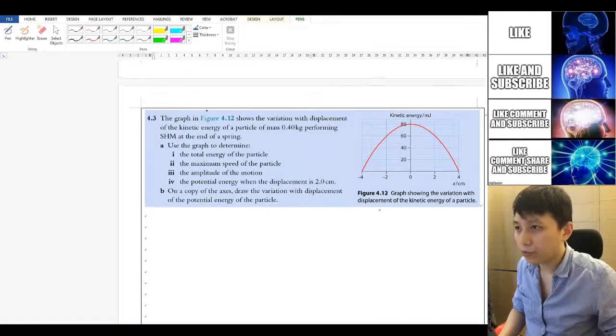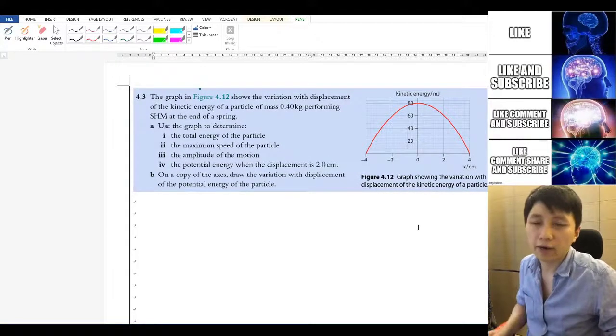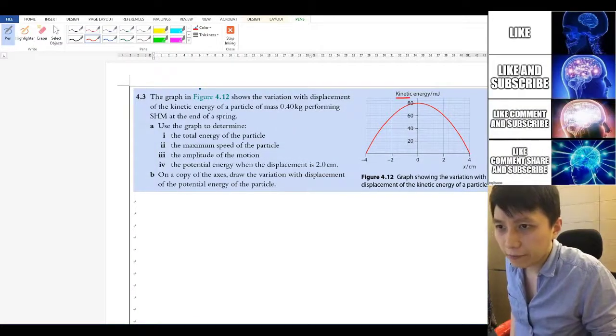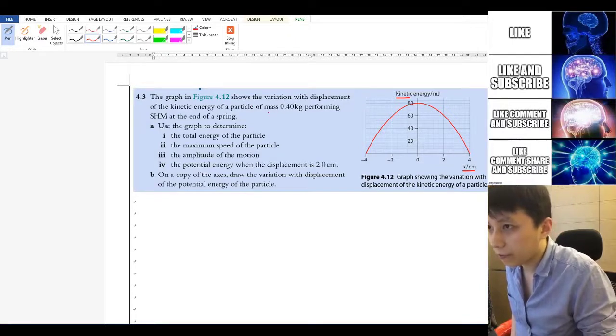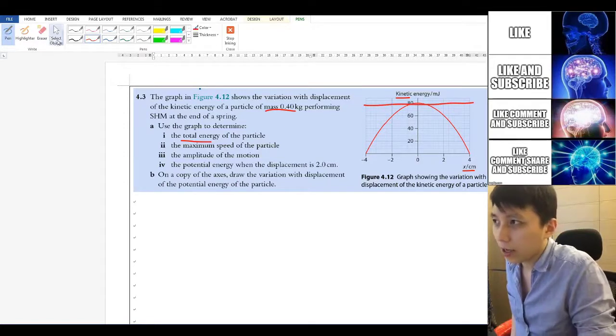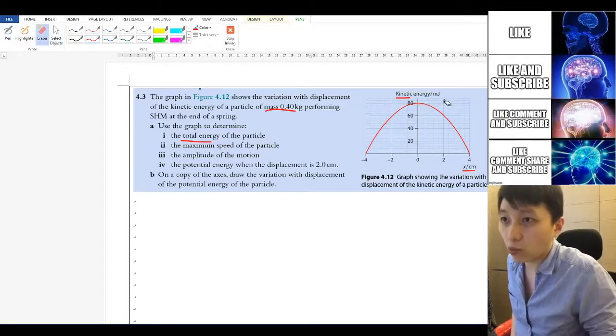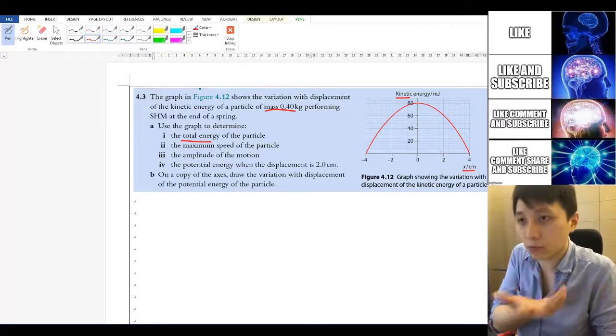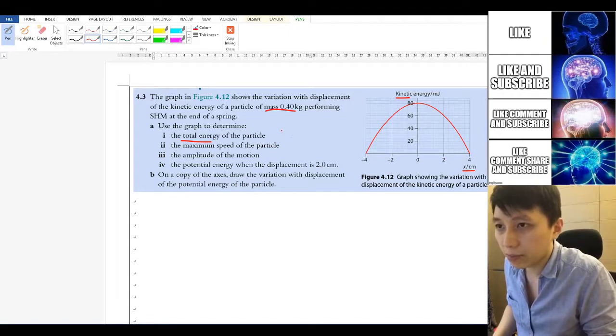Okay, so for now, I would like you to try out this question. So pause the video now and try it out first. A few moments later. Okay, so we have got a graph of kinetic energy versus displacement. And we have got the mass. And this is SHM. The first question is asking us total energy. So as you know, the total energy remains a constant throughout. And so in that case, we just have to look at when KE is maximum, then potential energy is at minimum, at zero more precisely. So the answer is simply 80 millijoules.